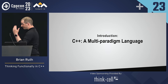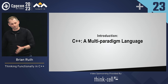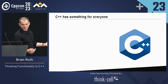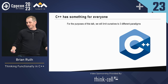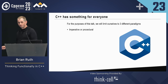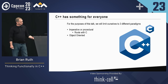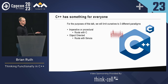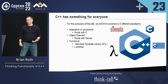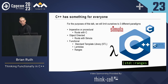It's always great when slides you develop ahead of time tie right into the keynote the morning you're giving them. C++ has something for everybody. For the purpose of this talk, we're going to focus on three different paradigms: imperative or procedural programming, which has its roots with C; the object-oriented approach, which has its roots with Simula; and functional programming — the standard template library, lambdas, and ranges are all functional portions of C++.